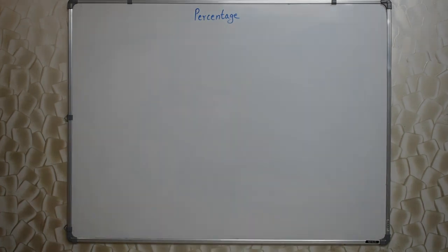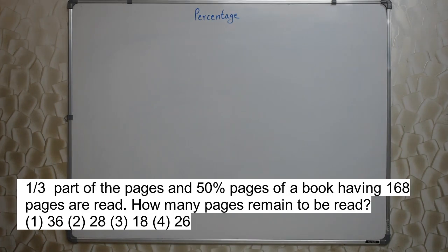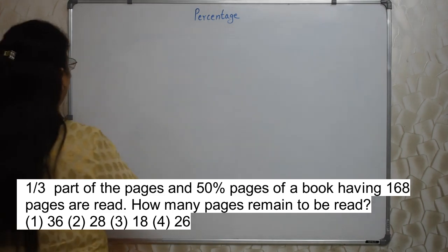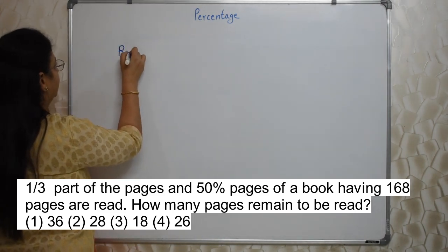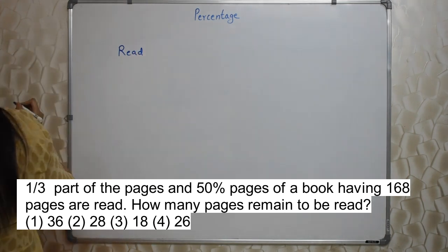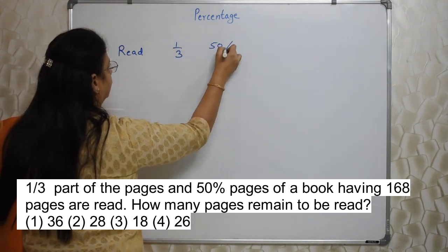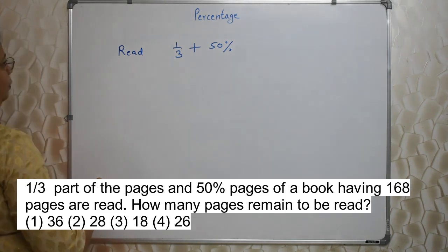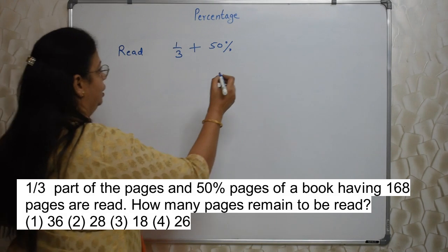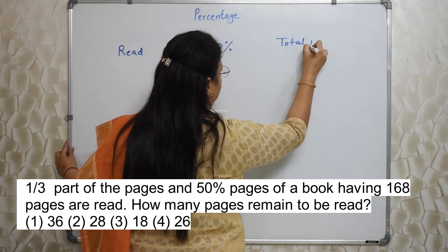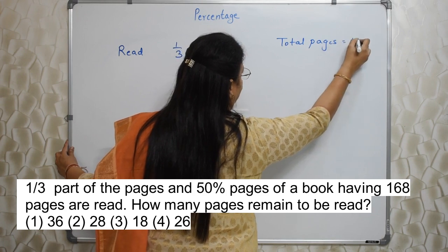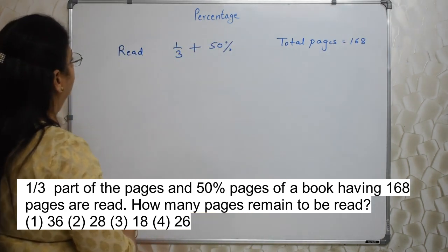Aane varte hai bachalo. One third part of the pages and 50% pages of a book having 168 pages are read. How many pages remain to be read? Okay. Kitnay reading ho gaya hai? Kitnay pages ka? One third and 50%. Itna ho gaya hai. So how many are remaining? Total pages kitnay hai? 168. Total pages is 168. That is what they have given. Okay.